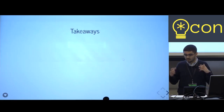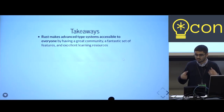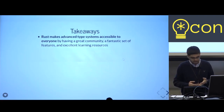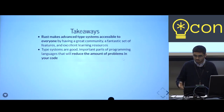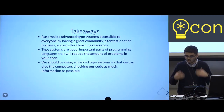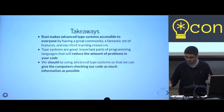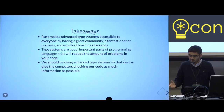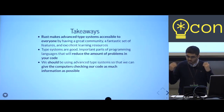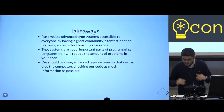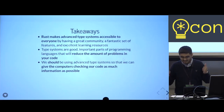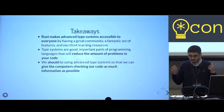The main takeaways from this talk are that Rust makes advanced type systems accessible to everyone by having a great community, a fantastic set of features, and excellent learning resources. Type systems are good, important parts of programming languages that will reduce the amount of problems in your code, and we should be using advanced type systems over ones with fewer features like in Java, C, or C++. The more checking that computers can do for us, the less we have to rely on ourselves to make sure that everything is right after every single change. This isn't about which syntax is the prettiest or which language is my favorite — it's Rust, by the way. It's about the principles and techniques that the language uses to help you write safe and correct code.